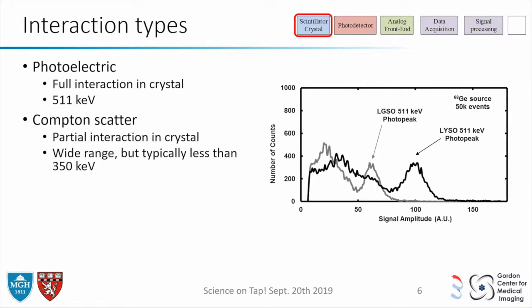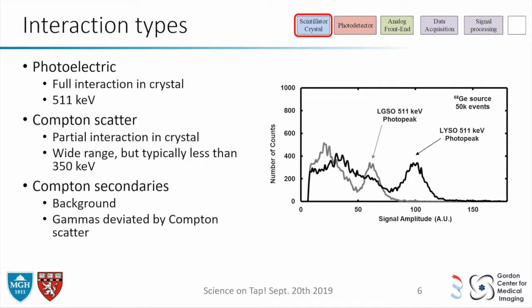Two different crystals will have different quantities of light output, so you want to adapt how you choose which events to keep. You also have Compton events that hit two different crystals. On the energy histogram — showing about 50,000 events — the scale on the bottom is how much energy an event has. You want to throw out events on the low-energy side of the graph and keep the interesting peak — those are the ones you want.